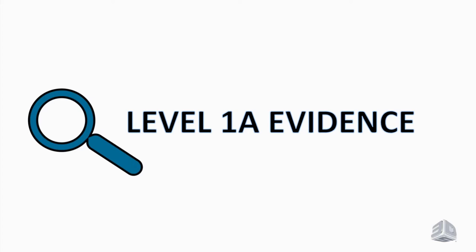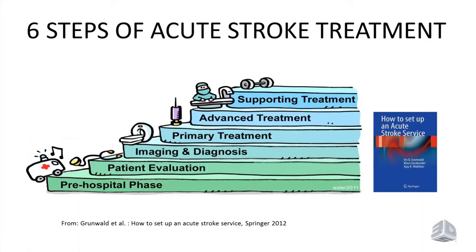Those six steps in the acute stroke pathway consist of the pre-hospital phase and patient evaluation — knowing the history of the patient, whether the patient is eligible for thrombolysis. Then imaging and diagnosis, to distinguish whether the patient has had a bleed, a stroke mimic, or a true stroke. Then primary treatment with IV rtPA, followed by advanced endovascular stroke treatment, and afterwards supportive treatment.